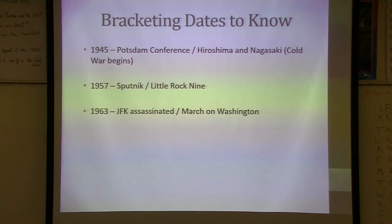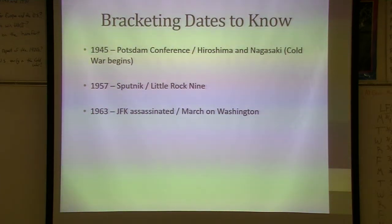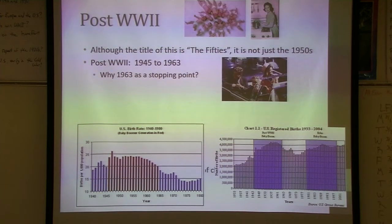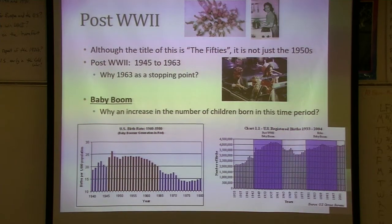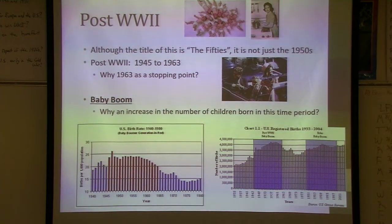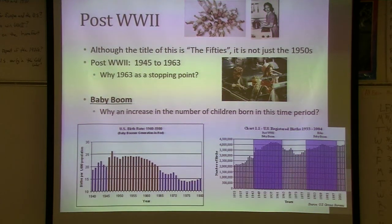In the middle of this period we have Sputnik, which we'll cover more in the Cold War, and Little Rock 9, which we'll focus on in civil rights. The 1950s spans 45 to 63, choosing kind of the assassination of JFK as the endpoint. That event takes away some of the innocence of our American culture.